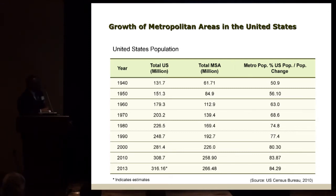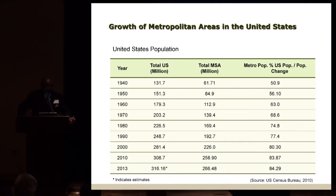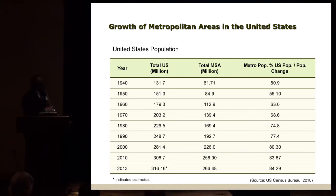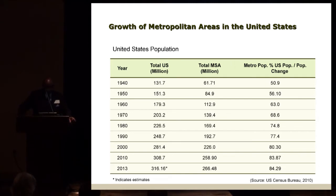In 1960, the population was almost 179 million, of which 112 million were located in metropolitan areas, making up 63%. If you look at 2010, that population is 308 million, of which almost 84% was located in metropolitan areas.